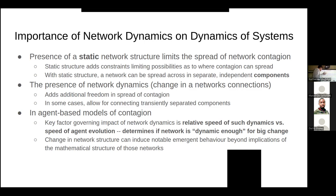Similarly, you can have networks where at any one time there are two regions that are not connected, but because there's a person who bridges between them - who travels between communities, for example - they can bring infection from one community to another. At no one time might La Loche in Saskatchewan's North be connected directly to La Roche, but if there's someone who goes between those communities who is infected, they might get infected in one and bring the infection to the other. At any one time they're connected with one community or the other, but they can transport that infection.